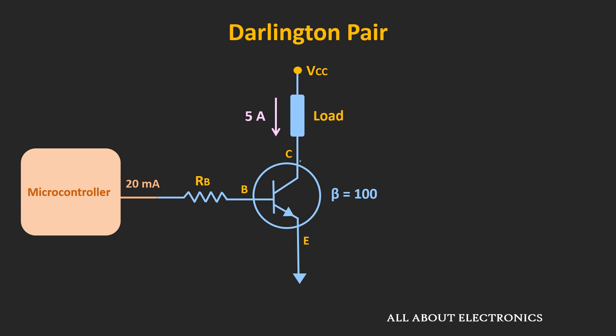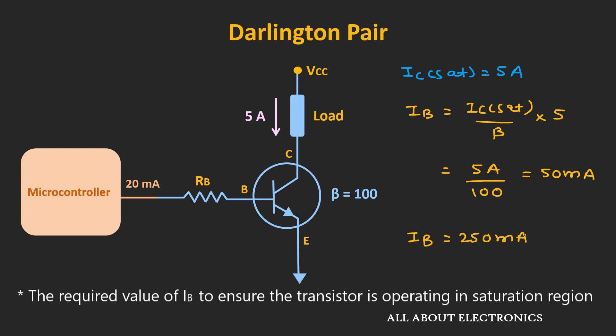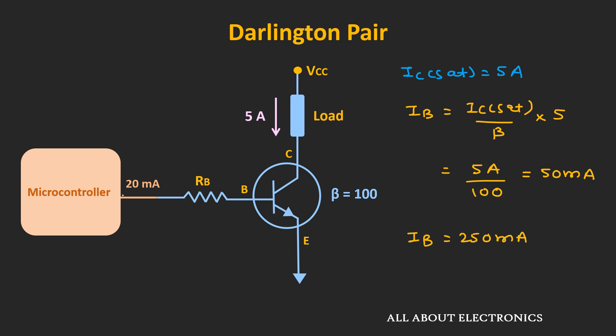As we are using the BJT as a switch, to draw a 5A current through the load, the value of IC(sat) will be equal to 5A. To drive this transistor into saturation, the value of the base current should be at least equal to IC(sat) divided by β, that is 5A divided by 100, which equals 50mA. To ensure the deep saturation condition, let's say the base current is 5 times this value, meaning the required base current will be equal to 250mA. But clearly, this microcontroller can only provide 20mA, and hence it won't be able to drive this particular load.